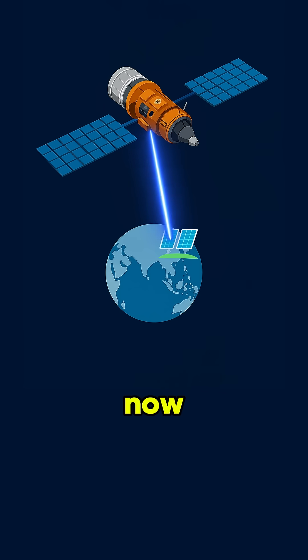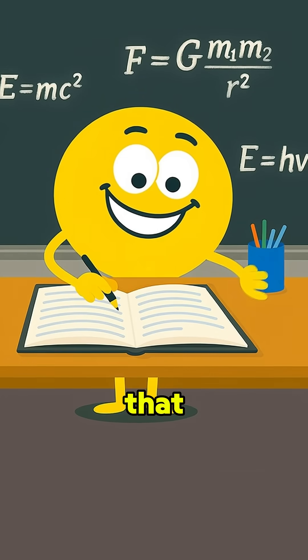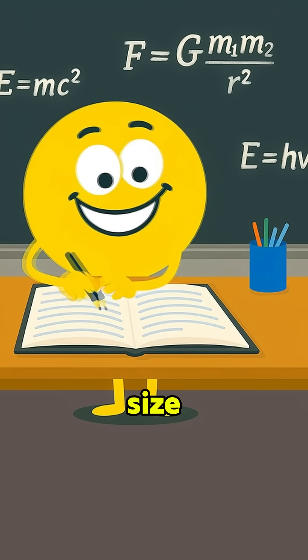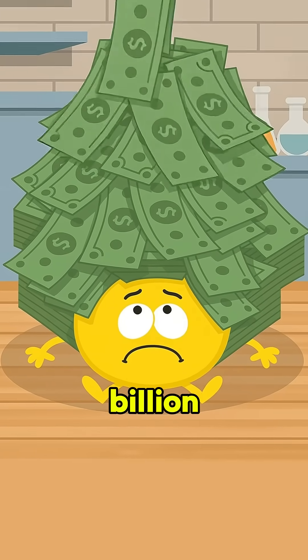Of course, there are challenges. Right now, only about 13% of the solar energy collected in space actually reaches the ground grid. And the cost? Yeah, that's a big one. NASA estimates that building a 2 gigawatt system—about the size of a nuclear power plant—could run anywhere from $276 to $434 billion.